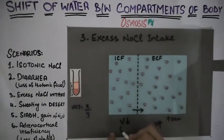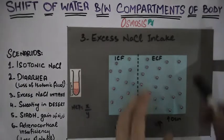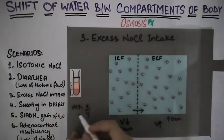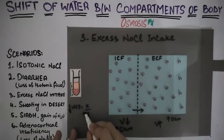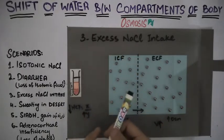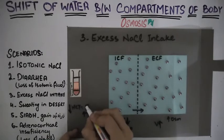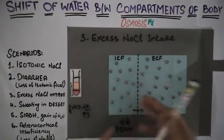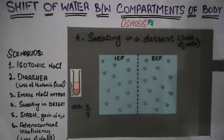The volume of extracellular fluid has increased after the shift, and the volume of intracellular fluid has decreased. The osmolarity of intracellular fluid has also increased along with extracellular fluid osmolarity. Regarding hematocrit, as the ECF volume has increased, RBCs are now less concentrated, so hematocrit will decrease. Both the increase in ECF and decrease in ICF lead to a decrease in hematocrit.